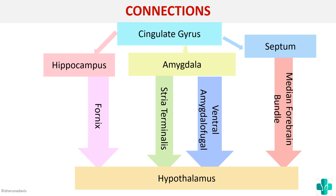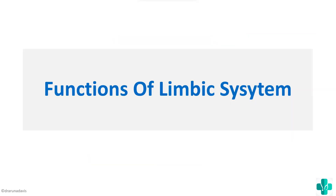These are the important terms you should know for the connections of the limbic system. The hippocampus connects to the hypothalamus via the fornix, the amygdala connects via the stria terminalis and ventral amygdalofugal fibers, and the septum connects via the median forebrain bundle. Now we'll move on to the functions of the limbic system.